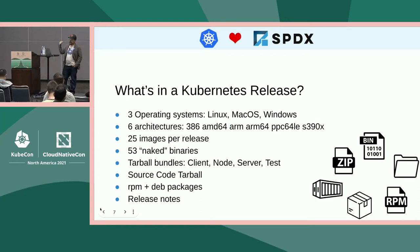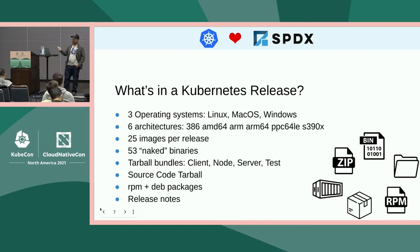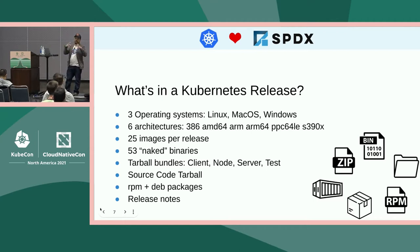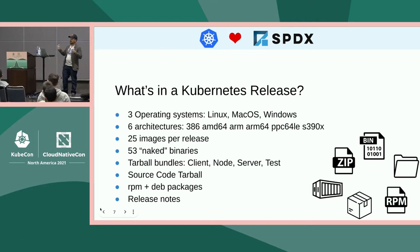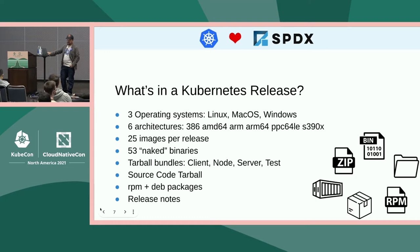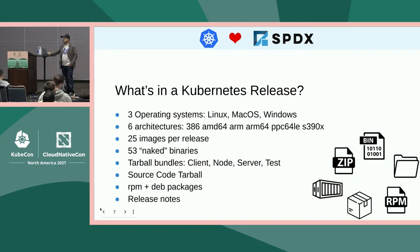With each release we produce 25 images and 53 naked binaries. Naked binaries are what you download when you get, for example, a copy of kubectl ready to run — that is what we call a naked binary, same thing for kubeadm and so on. We also have a bunch of tarballs which bundle together components of the whole Kubernetes system, called client, node, server, and tests. The client tarball includes kubectl, the node tarball contains the kubelet binaries, and so on. We also produce a source code tarball, RPMs, packages, and release notes.